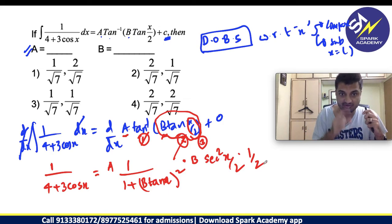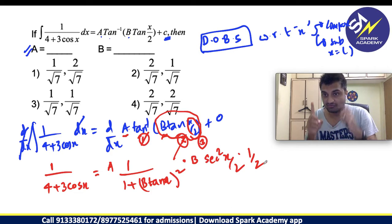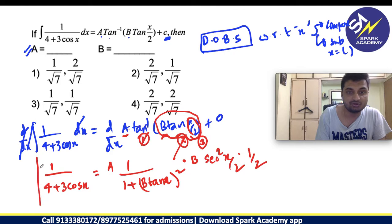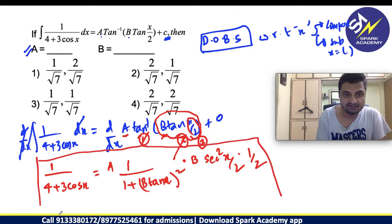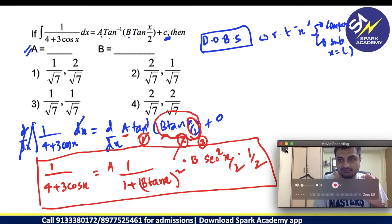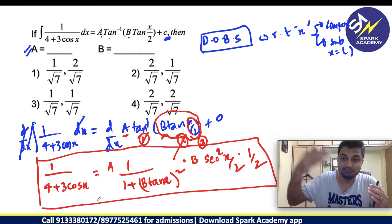I am using the fundamental principles of differentiation to arrive at this. I am getting 1 by 4 plus 3 cos x equals to A into 1 by 1 plus B tan x by 2 whole square into B into secant square x by 2 into 1 by 2. This is what I have got so far. Now, we are expected to find the A and B values. This is the expression we know till here.